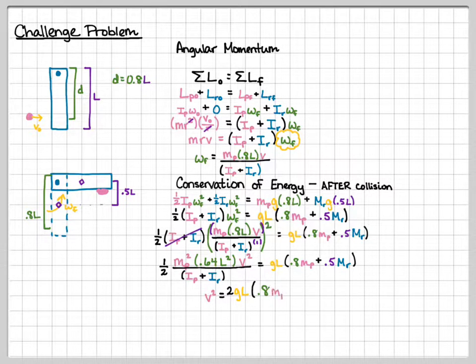So getting rid of the one half, 2 times GL times 0.8 MP plus 0.5 MR times MP times 0.8 L squared times 1 third MR L squared. So there, this is where I plugged in my moments of inertia, that IP plus IR. So remember, for a point mass, it's MR squared. So mass of my point mass times the radius at which it acts, so that's 0.8 L squared. Plus, it tells you in the question that the moment of inertia for a rod rotating about its end is 1 third ML squared. So that's where that comes from. All that divided by 0.64 L squared MP squared.